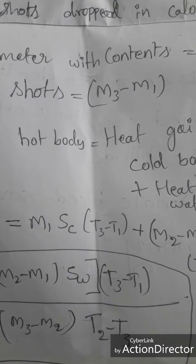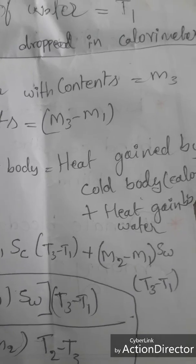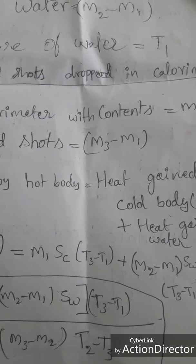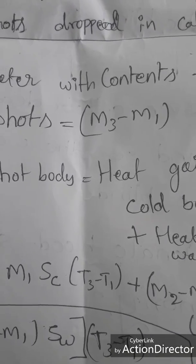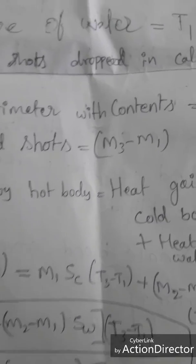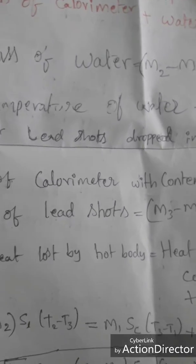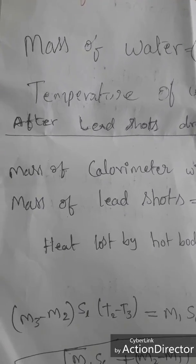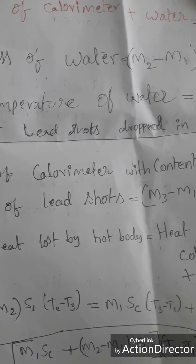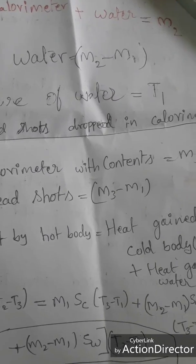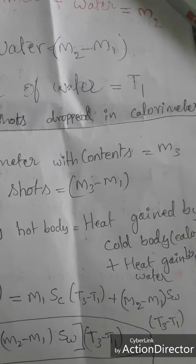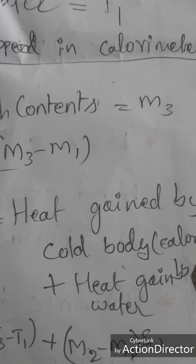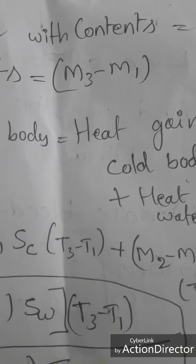Let the specific heat of the lead shots be SL, and the specific heat of water SW equals 1. The initial temperature is T1, the final temperature of water is T2, and the resultant temperature after mixing is T3. Apply the principle of the method of mixtures.